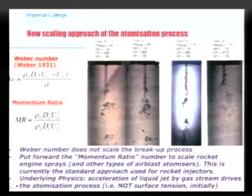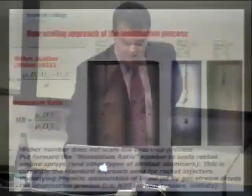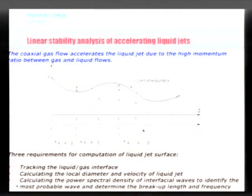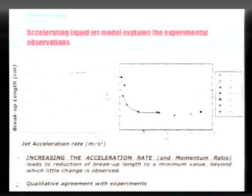The momentum ratio has become a standard approach in scaling jets for rocket injectors and other applications. The underlying physics is that as you have this high-speed jet around the liquid, the liquid jet accelerates. As a consequence, we developed a linear stability analysis of an accelerating liquid jet and how the interface develops, calculating how the liquid jet breakup length changes as a function of the acceleration rate, which is similar to the momentum ratio. The measurements from experiments qualitatively give you the same result.